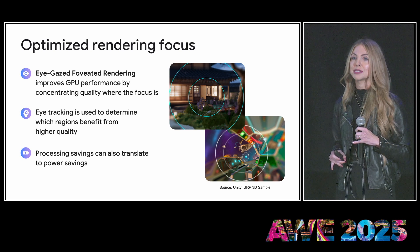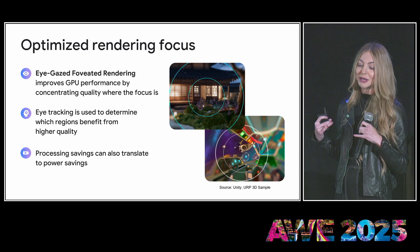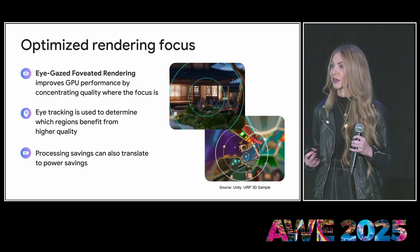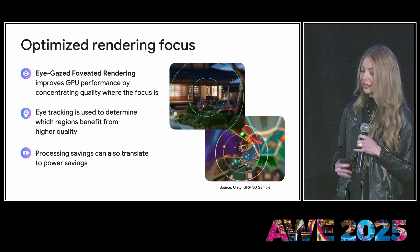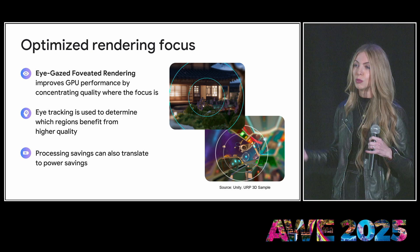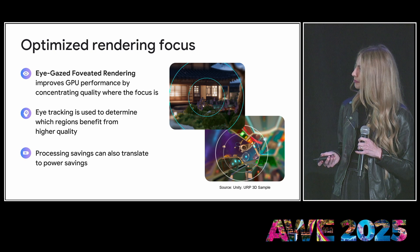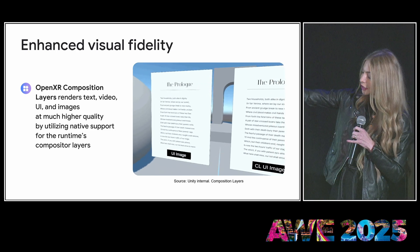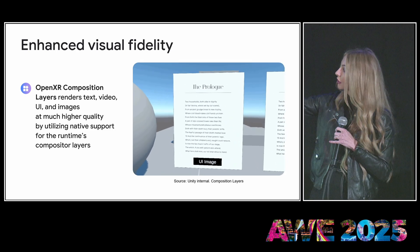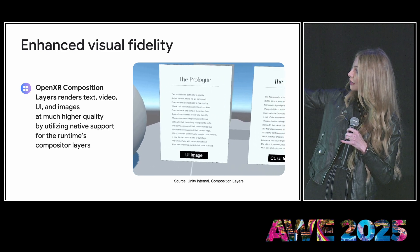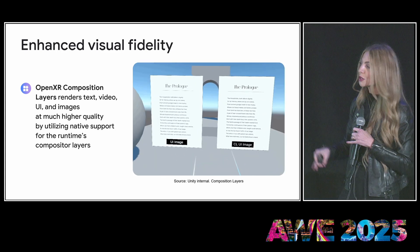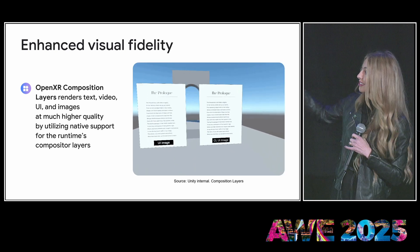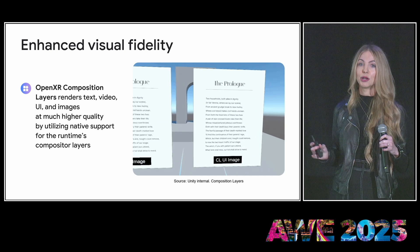One of the most exciting advancements for XR developers has been eye gaze foveated rendering. This feature leverages eye tracking technology to dynamically adjust rendering focus, giving you better visual clarity and GPU performance for smoother, more immersive XR experiences. Another rendering feature we're super excited about is composition layers. Here we've got a side-by-side comparison — on the left, a regular texture; on the right, a composition layer. As you can see, composition layers significantly reduce artifacts, giving you clearer text, sharper outlines, and just an overall better appearance.